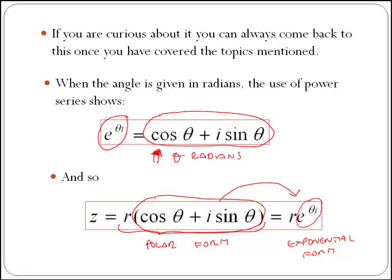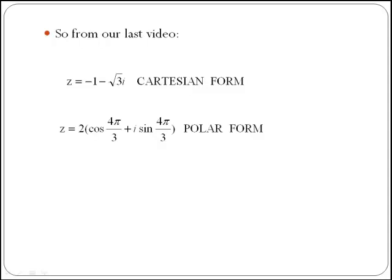So from our last video, if you remember the last example, we had a number given in Cartesian form, minus 1 minus the square root of 3 i, and we converted that one into the polar form, which is 2 by cos of 4 pi over 3, which was the angle, plus i by sine of 4 pi over 3, which is theta as well. And then 2 is our modulus.